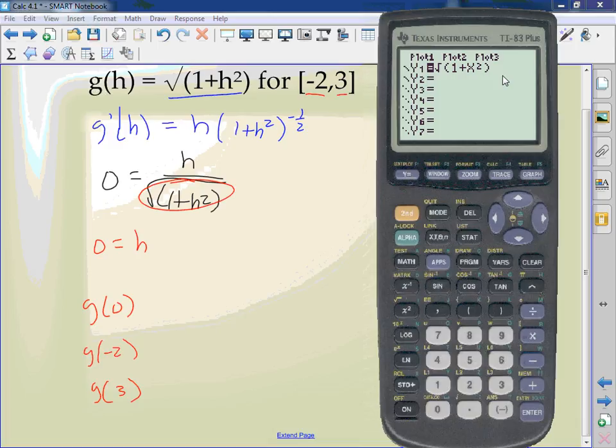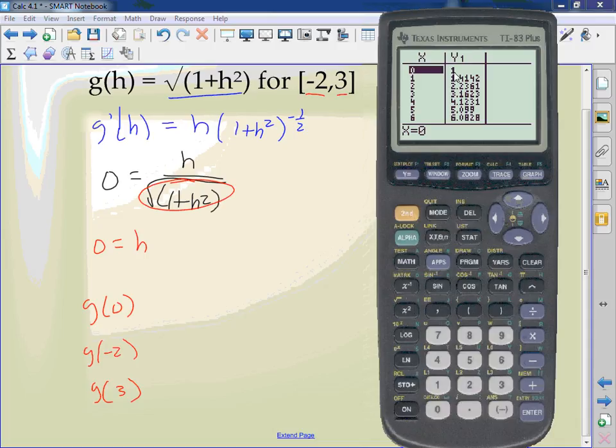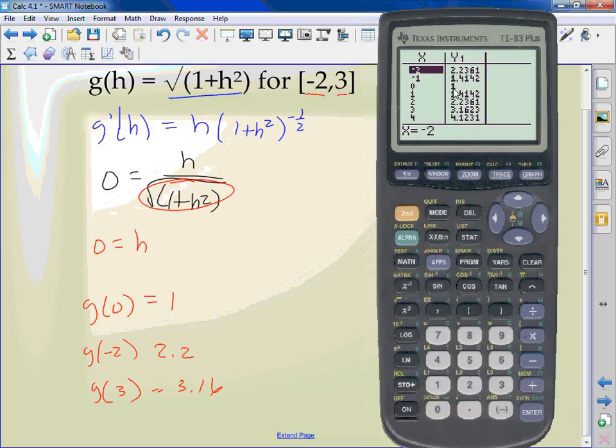So I substitute in g of 0, g of negative 2, g of 3. And I'm going to use the calculator because we need time. I already have it typed in, second table. 0 is 1. Negative 2... Actually let's do 3 because it's right on the screen. 3.16. Without using the calculator I would have had a radical. Negative 2 is 2.24. Why is it 1? At 0 it's 1. Okay. If I look at the graph at 0 what's my y value? 1. This means I have a minimum at 0, a maximum at 3. That negative 2 is an extreme value but it's not a max or a min.